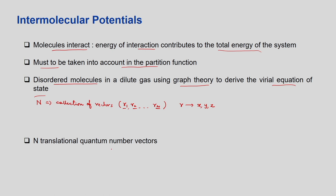There will also be n translational quantum vectors, which give the kinetic energy component via momentum. These are the angular quantum momentums or translational quantum vectors l1, l2, up to ln. Each lj has components lxj, lyj, and lzj — the quantum numbers across the x, y, and z coordinates. With this description we can now define the potential energy of interaction for the n-particle system.